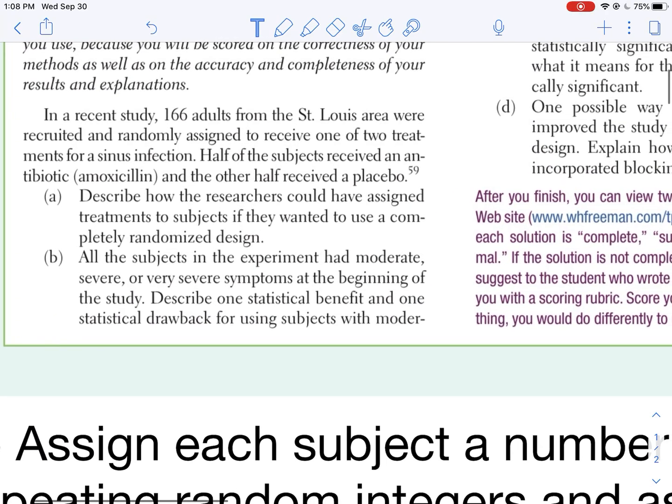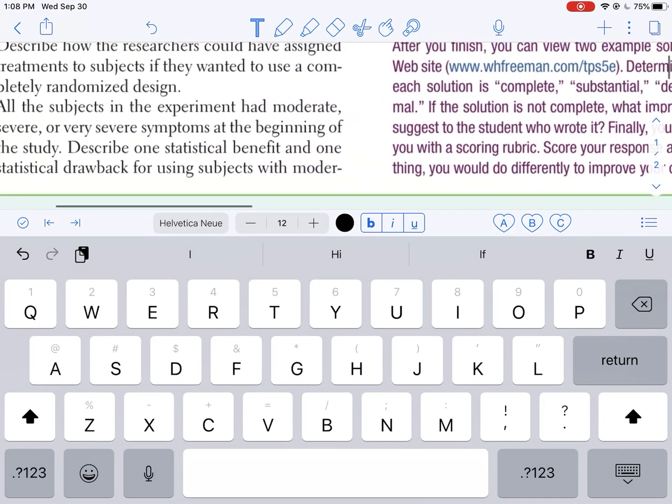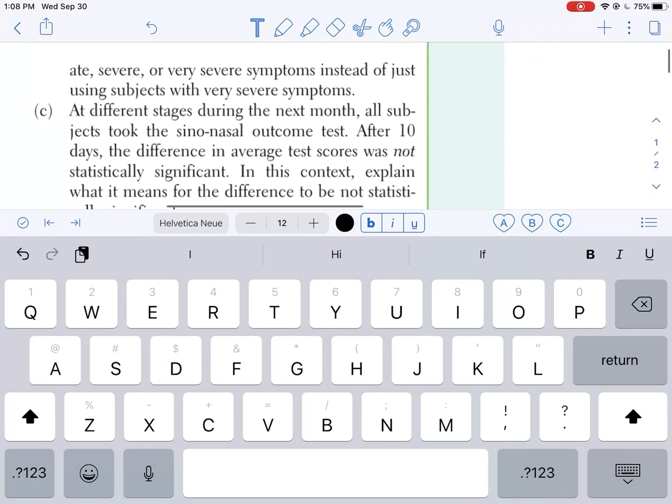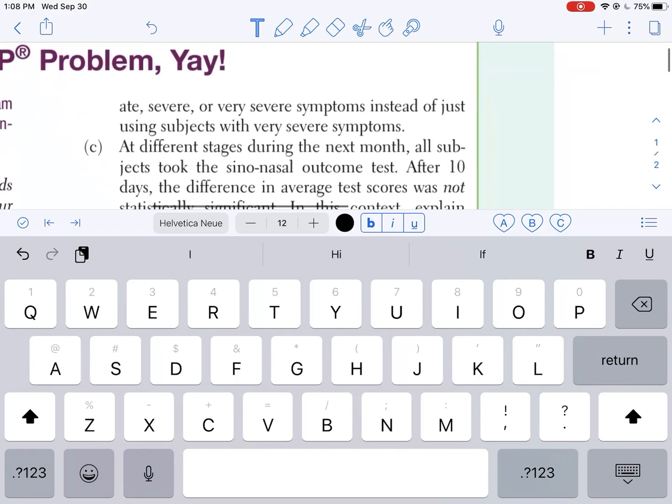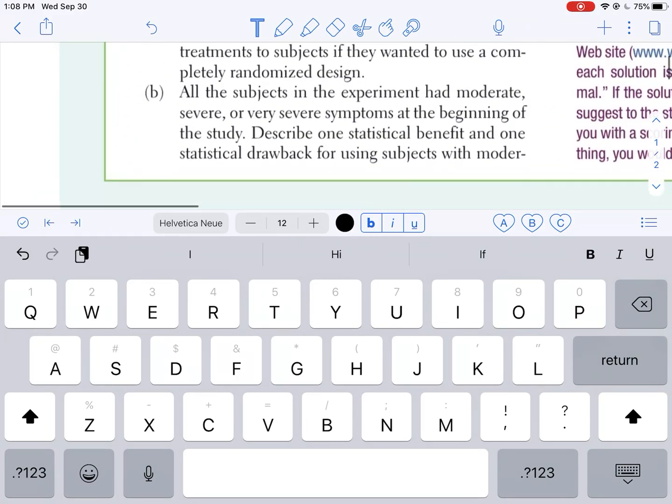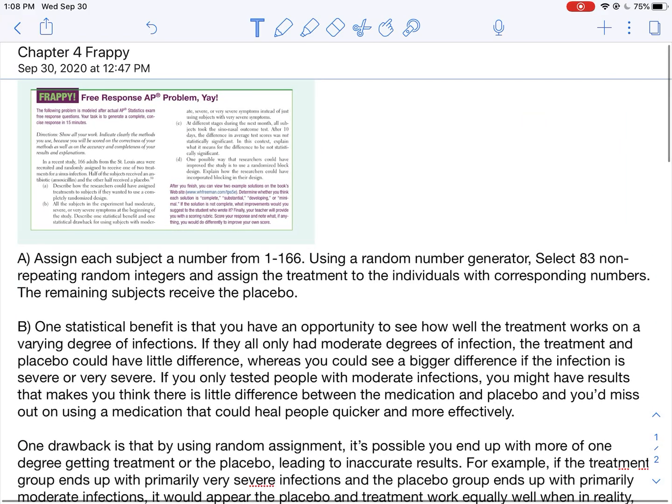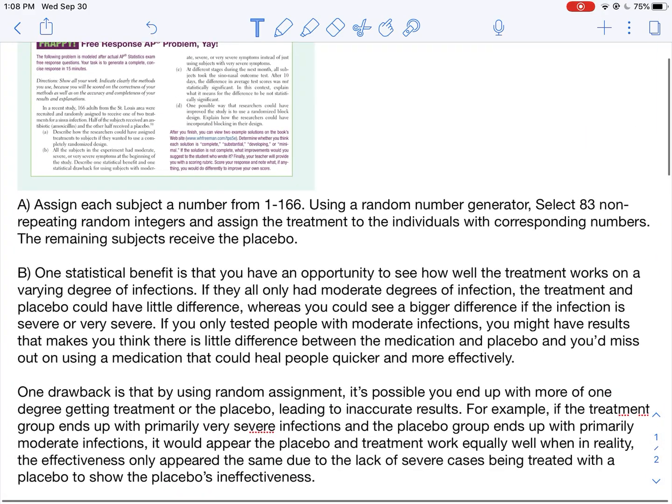Make sure you include details like that. You notice I mentioned how I assign the subjects the number. Always say that first, that you're going to assign a number, and then using the random number generator select 83. I could have said, you know, I could select 83 non-repeating random integers and assign those the placebo and then give the rest of them the treatment. That doesn't really matter. You just want to make sure there's some random assignment going on. All right, the second part said all the subjects in the experiment had moderate, severe, or very severe symptoms at the beginning of the study. Describe one statistical benefit for using subjects with moderate, severe, or very severe, and one drawback or benefit and one drawback.